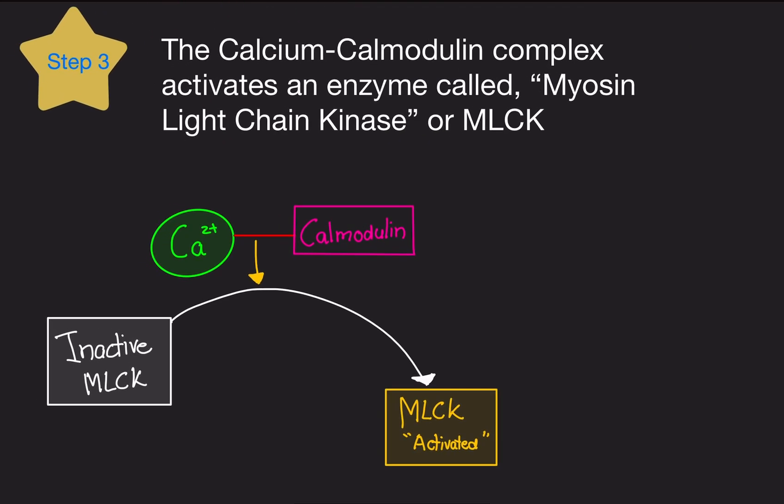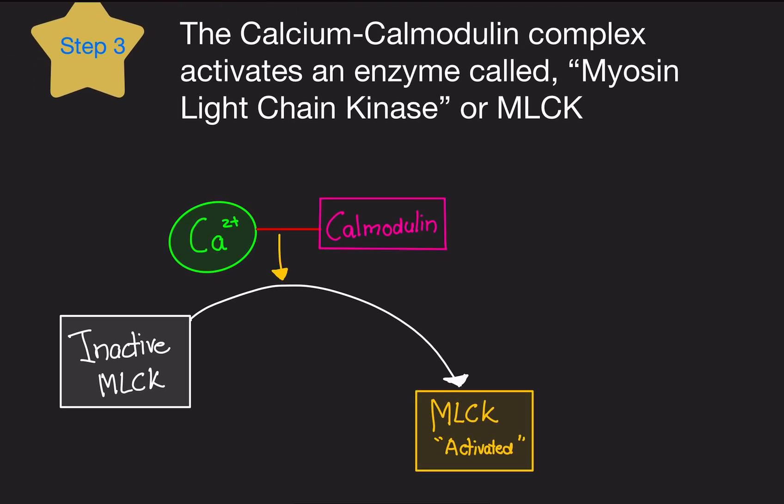This calcium-calmodulin complex is now able to activate an enzyme called myosin light chain kinase, or MLCK. This enzyme starts out as inactive and doesn't do anything, but when calcium and calmodulin come together they activate MLCK. It is now activated.